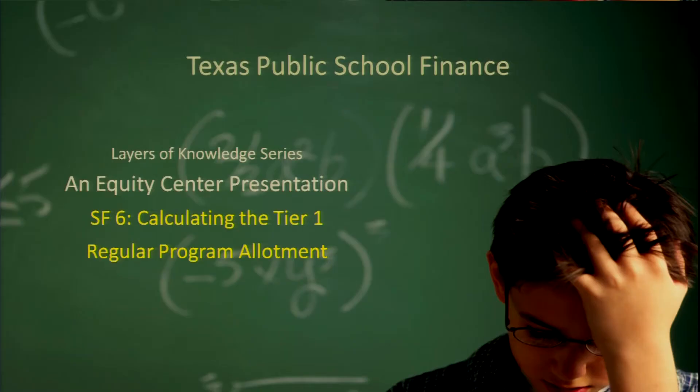We still have some considerations to do, but we're getting to the point now where we're going to calculate actual allotments — the monies that will go to districts. We're going to start with the most appropriate one: the regular program allotment, which is about three quarters of the funding that a district gets in the foundation school program. That's your general money.